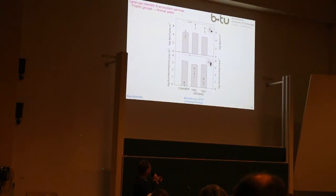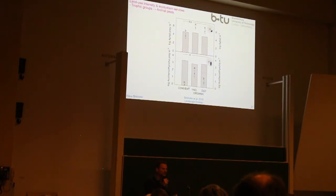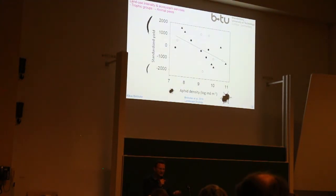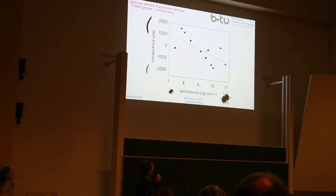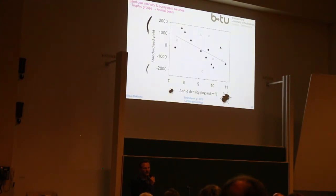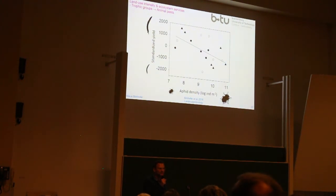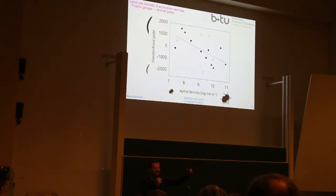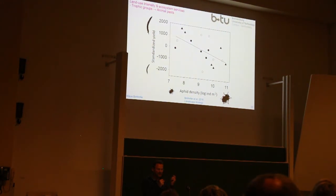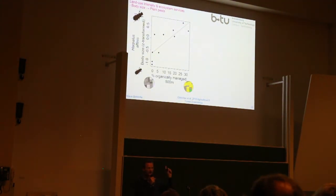For cicadas the pattern was less clear, though young organic fields showed a similar trend. More importantly, in the same dataset: more aphids in a field correlated with lower yield — a negative relationship between aphid abundance and yield. So having a management component that promotes aphid predation could directly contribute to higher yields for the farmer.